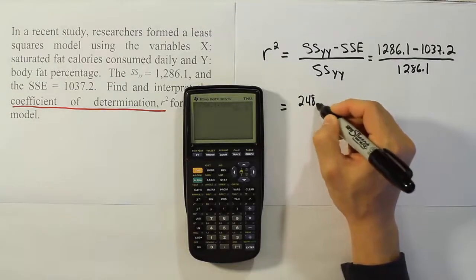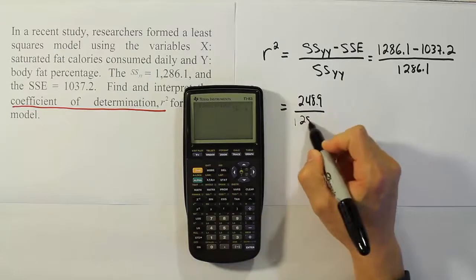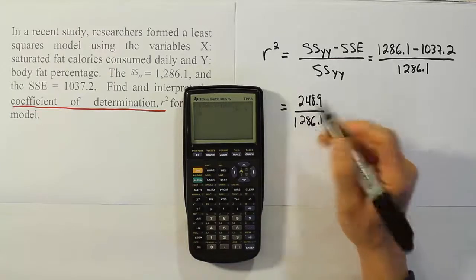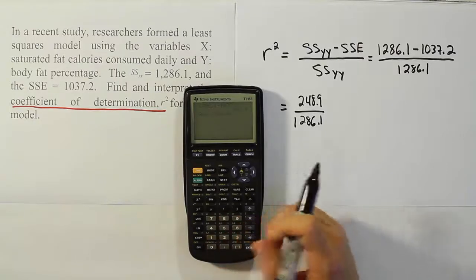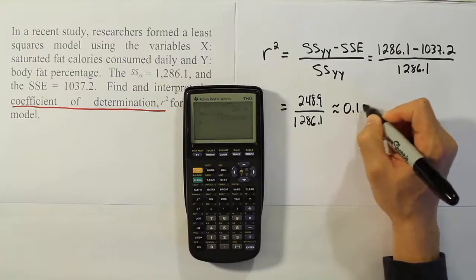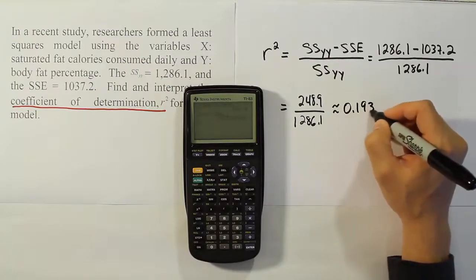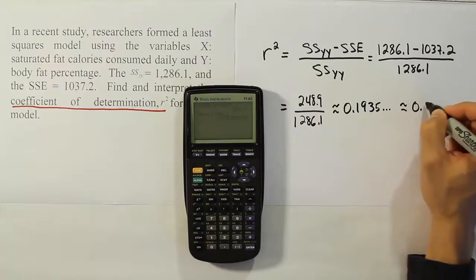So, 248.9 divided by 1,286.1. Okay, so divide that by 1,286.1. And when we do that, we end up with the answer approximately 0.1935, or approximately 0.19.